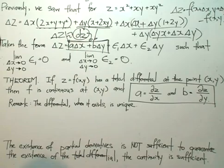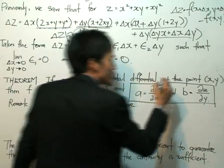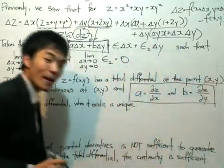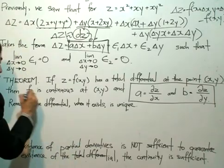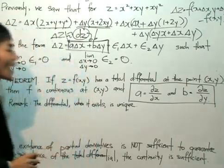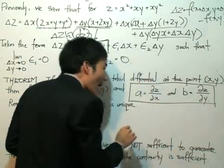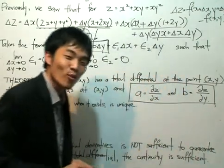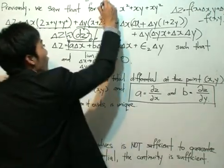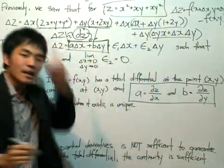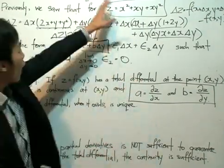Here is the theorem. The theorem says that if z equals f(x, y) has a total differential at a point (x, y), then two things happen: f is continuous at (x, y), and — the more important part — a equals partial z over partial x, and b equals partial z over partial y. This is very important because straight from the function, we can immediately calculate the total differential by taking the partial derivatives.